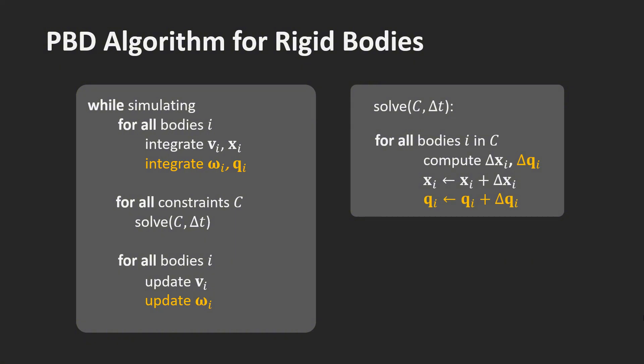A constraint can now affect both the position and the orientation of bodies. Therefore, we compute the updates delta x and delta q for all bodies participating in the constraint. Then, we apply them to the position x and the orientation q.